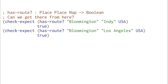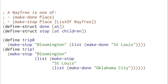We want to write the hasroot function, and hasroot should work for both going from Bloomington directly to Indianapolis and traversing across the country from Bloomington to Los Angeles. We decided to write hasroot using a way tree. We were going to construct a way tree that's either done — meaning we've gotten to where we're going or as far as we can go — or an intermediate stop where we're at a particular place and we have a collection of subsequent way trees that we can follow.